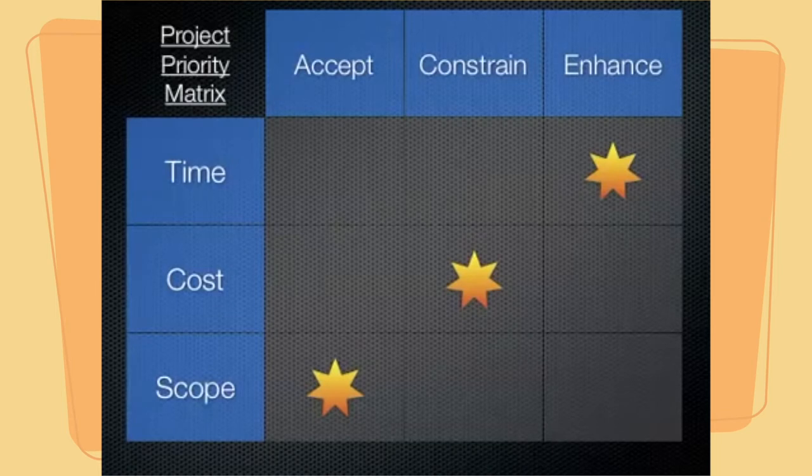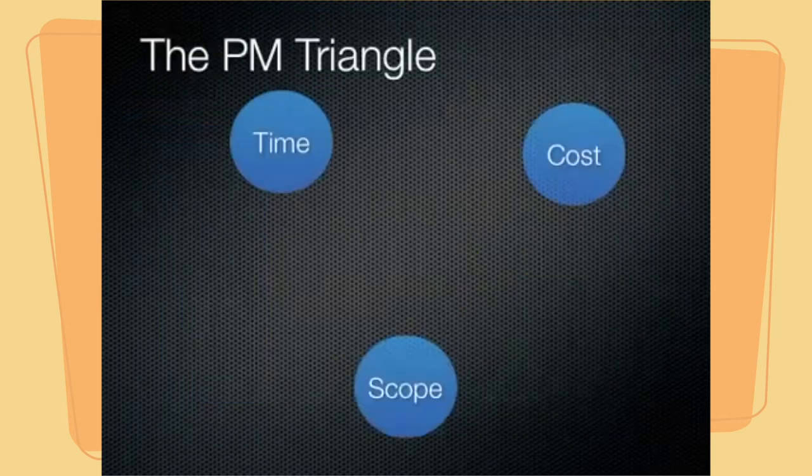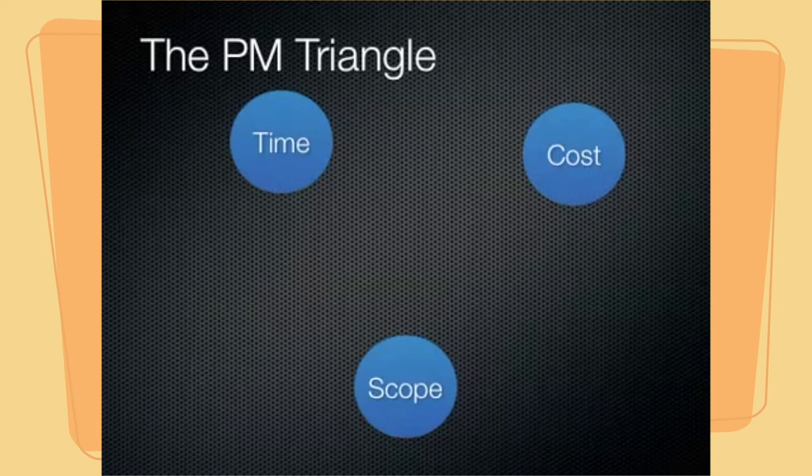Obviously, we are going to be communicating these types of trade-offs as we go throughout the project with our stakeholders. But this is a very useful tool that we can use to have an idea up front of the type of trade-offs that we are going to be willing to make as the project proceeds. So hopefully that will provide you with a good introduction into the project management triangle, also known as the triple constraint, and how to create a project priority matrix. See you next time.